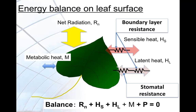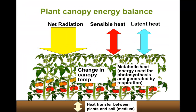This concept can be expanded to the canopy level. As in leaf energy balance, factors affecting canopy energy balance include net radiation, sensible heat, latent heat, canopy temperature change, and metabolic heat. One additional factor unique to canopy energy balance is heat transfer between the soil and the canopy or plants. Using this same framework, you can now understand canopy temperature the same way as leaf temperature energy balance.